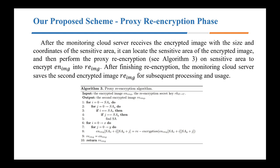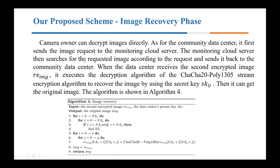The figure shows the algorithm flow of IE-IMG re-encryption. Camera owners can decrypt images directly. As for the community data center, it first sends the image request to the monitoring cloud server. The monitoring cloud server searches for the requested image and sends it back to the community data center. When the data center receives the second encrypted image IE-IMG, it executes the decryption algorithm of the ChaCha20Poly1305 stream encryption to recover the image using the secret key SKU. Then it can get the original image, as shown in Algorithm 4. At this point, our entire workflow is complete.